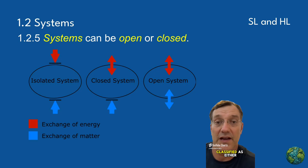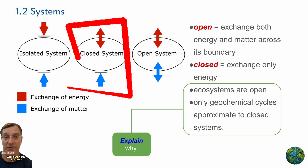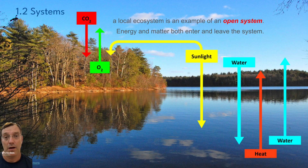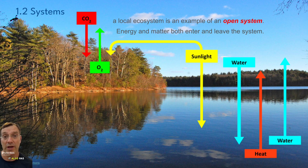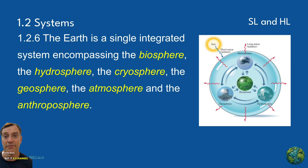Systems can be classified as either open or closed depending on how they interact with their surroundings. Open systems exchange both energy and matter across their boundaries, while closed systems only exchange energy. Almost every ecosystem is an open system — for example, a forest takes in sunlight, water, and carbon dioxide from its surroundings while releasing oxygen and water vapor, and it also has animals migrating in and out. The Earth as an entire system approximates a closed system: it receives energy from the sun and radiates heat back into space, but exchanges very little matter with its surroundings across the atmospheric boundary.